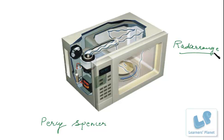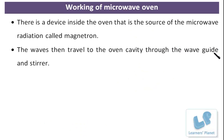So now let us move on to our next session, that is the working of microwave oven. Yes my dear friends, there is a device inside the oven that is the source of the microwave radiation called magnetron. So basically the working takes place with the help of this radiation called magnetron.